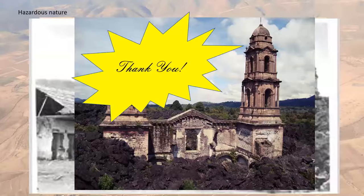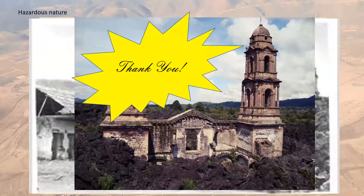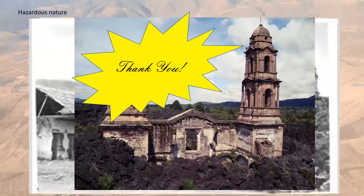Regarding whether tuff should be classified as sedimentary because it forms by compaction and cementation: when we talk about tuff or ignimbrites, we use the term 'welding' not 'cementation.' Tuff can be highly welded — forming ignimbrites that look like rock, identifiable by eutectic and fiamme textures — or loosely welded, forming loose deposits. The process and terminology distinguish tuff from sedimentary rocks.